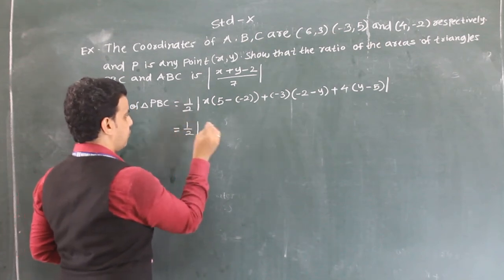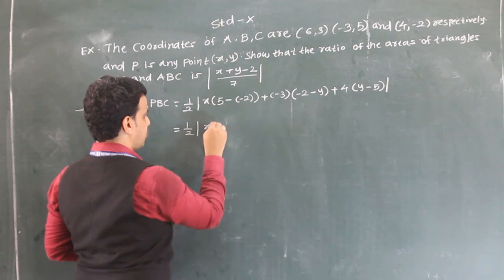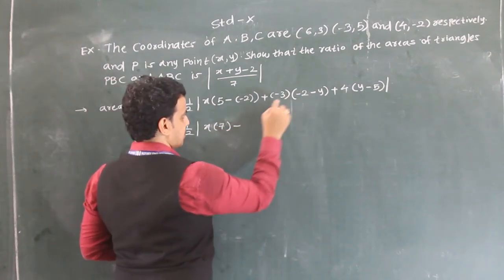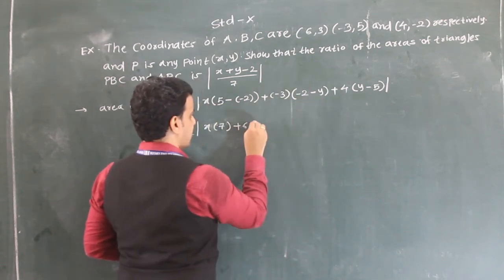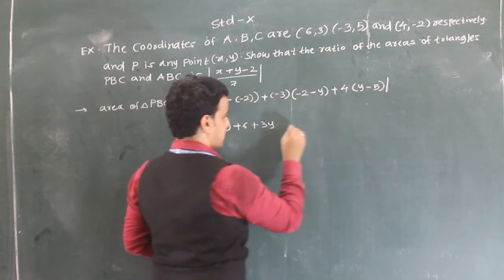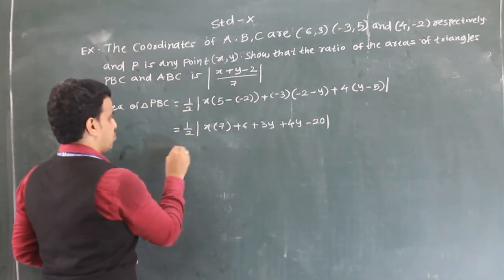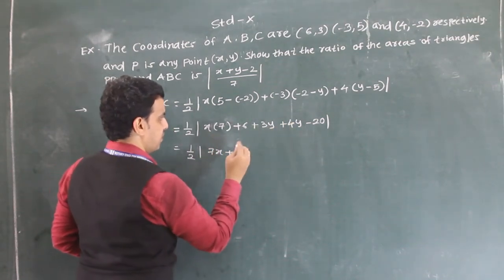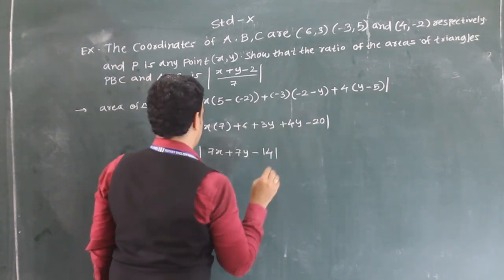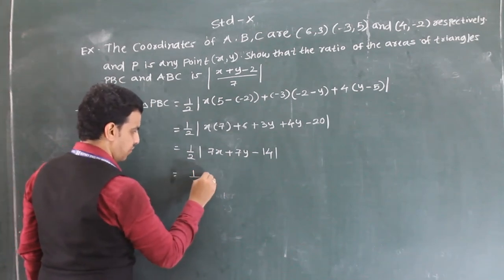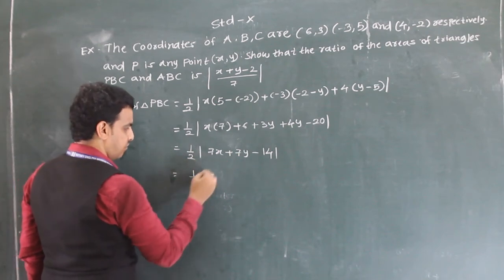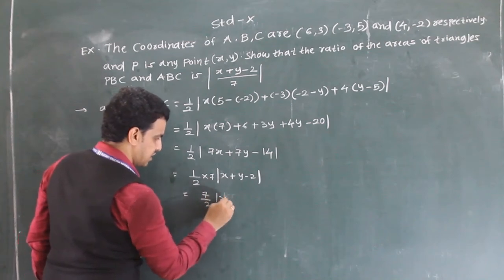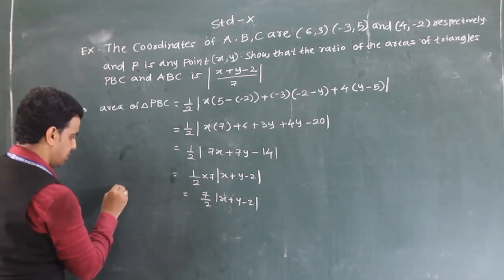Simplifying: half times |7x + (-3)(-2-y) + 4(y-5)| = half times |7x + 6 + 3y + 4y - 20| = half times |7x + 7y - 14|. Taking out factor 7: this equals 7/2 times |x + y - 2|. So area of triangle PBC = (7/2)|x + y - 2|.